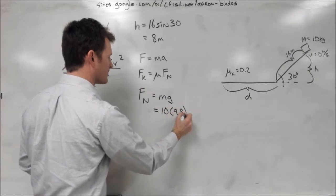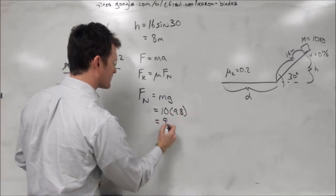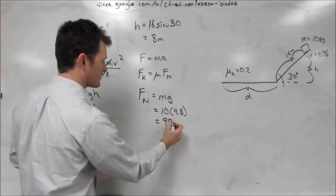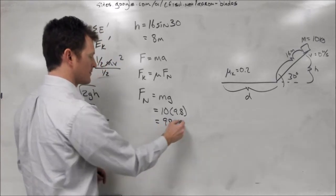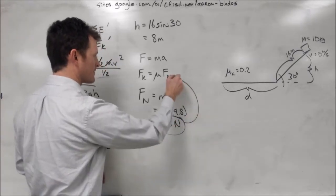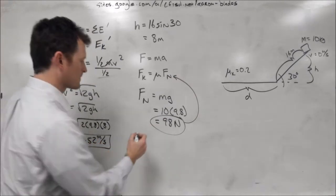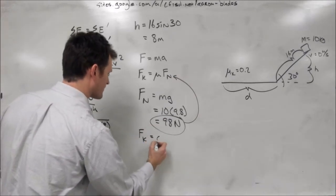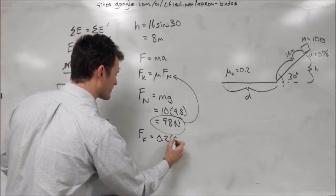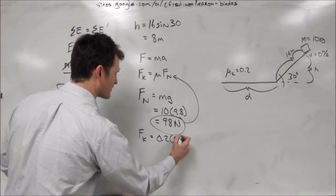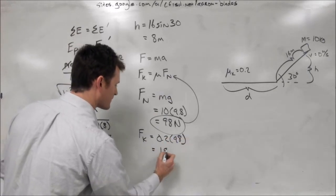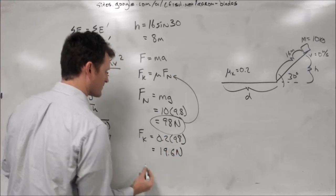or 10 times 9.8, which equals 98 newtons. So if we plug that into our kinetic friction equation, we have our force of kinetic friction is 0.2 times 98 newtons, which gives us 19.6 newtons.